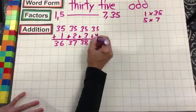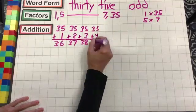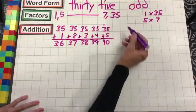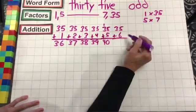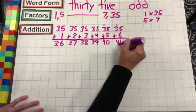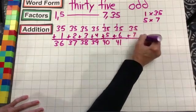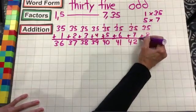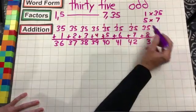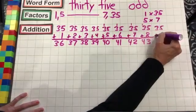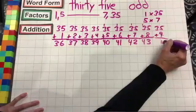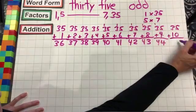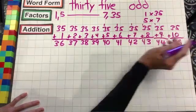35 plus five: five plus five is 10, drop the zero, carry the one, one plus three is four. 35 plus seven: five plus seven is 12, drop the two, carry the one, one plus three is four. 35 plus nine: five plus nine is 14, drop the four, carry the one, one plus three is four. 35 plus ten: five plus zero is five, three plus one is four. There we have it — our addition.